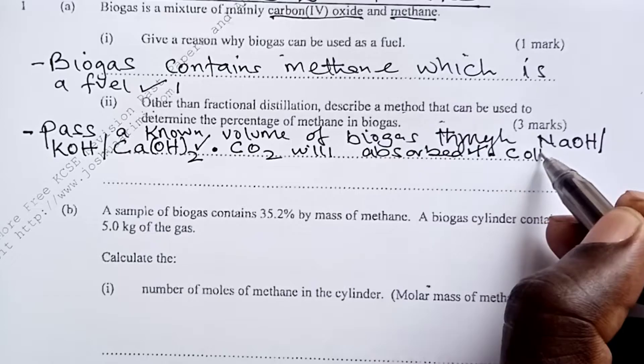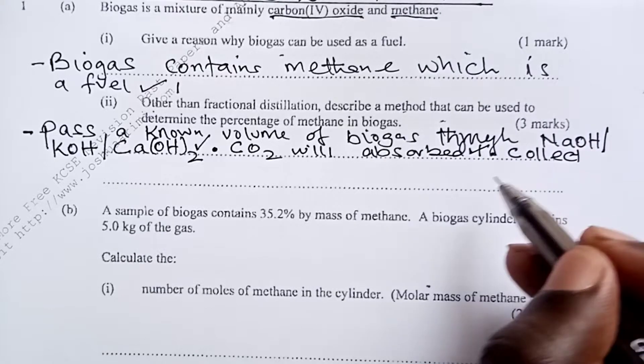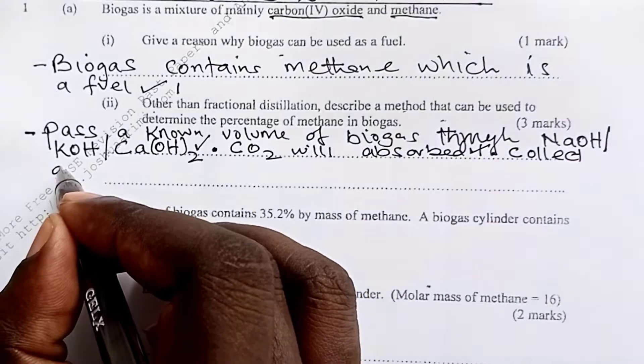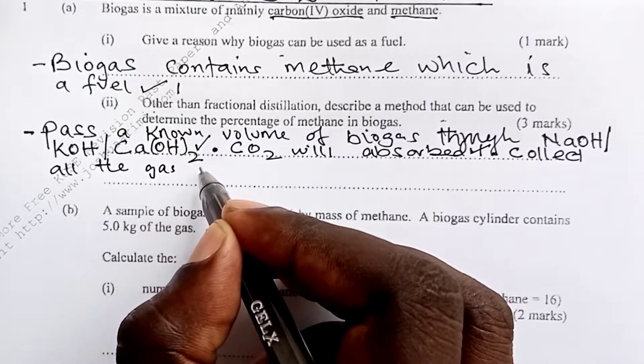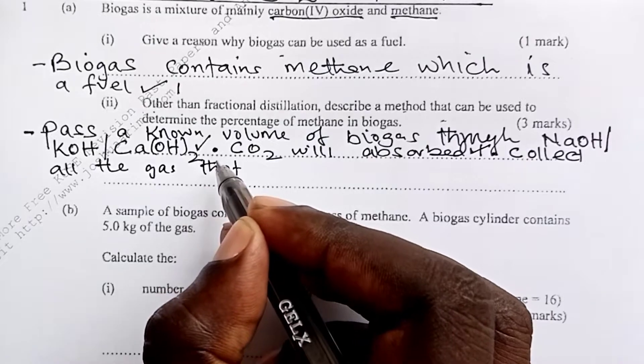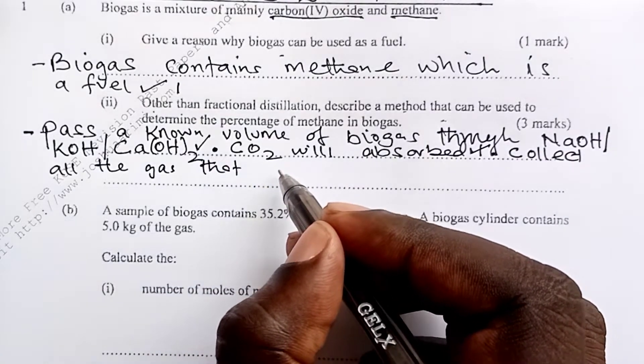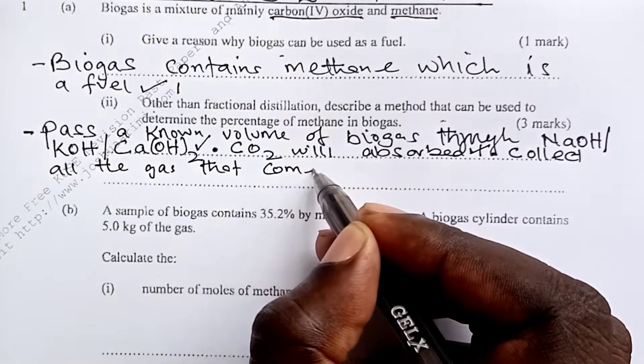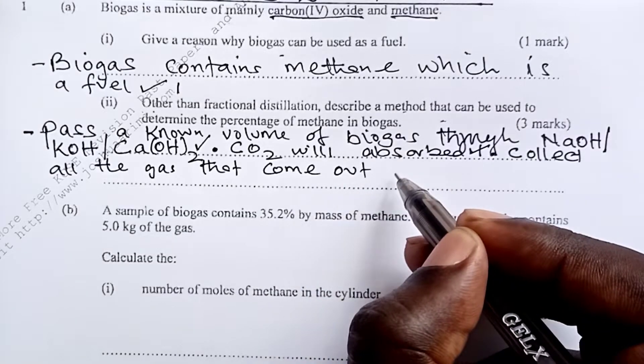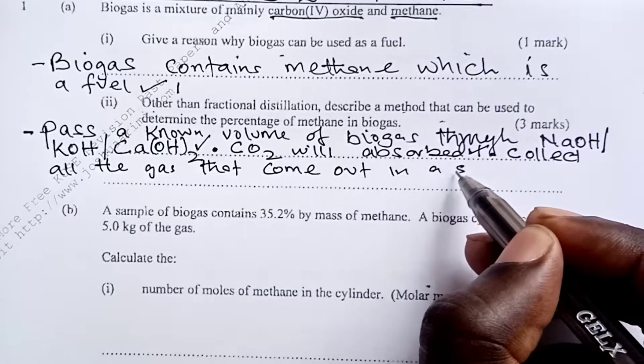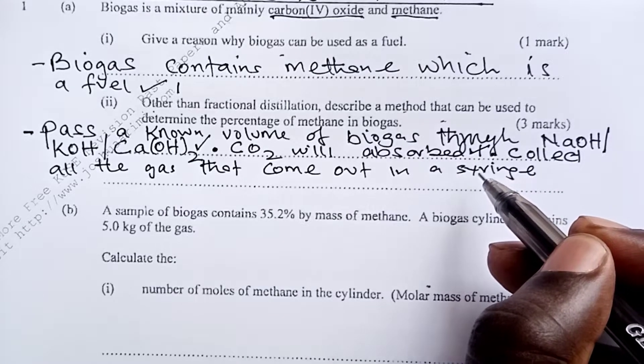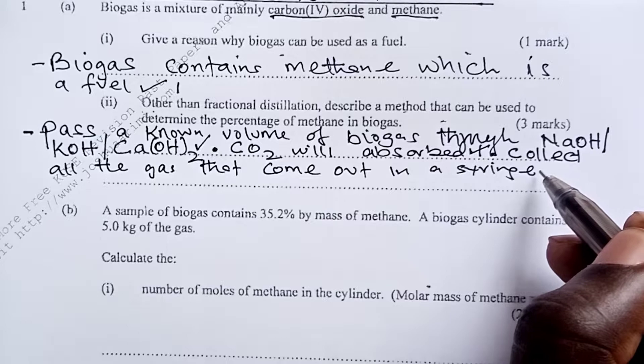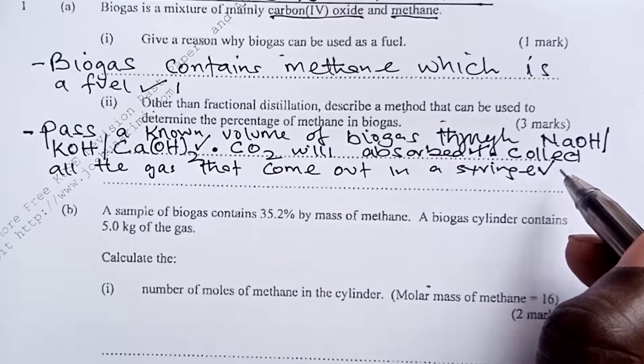Writing this is the next half mark. Then after you've done that, we shall then collect all the gas that come out in a syringe. This will now be our methane. So doing this, one whole mark.